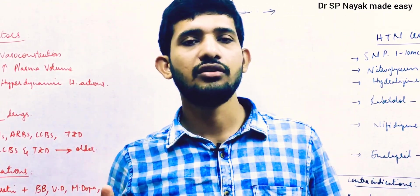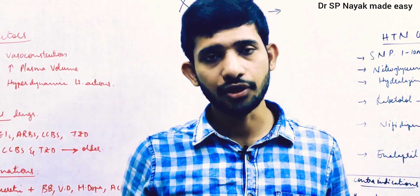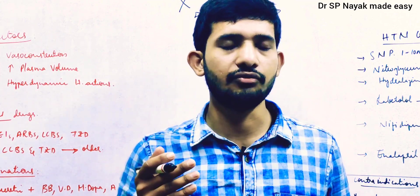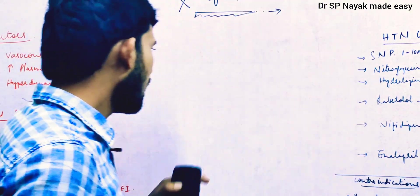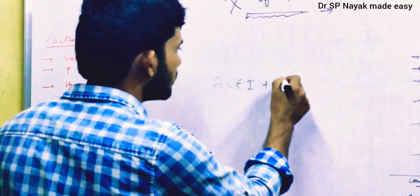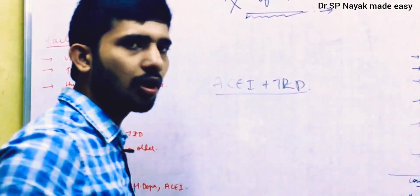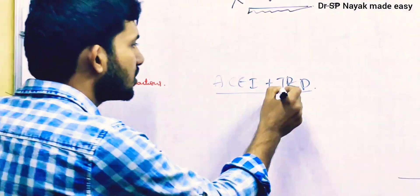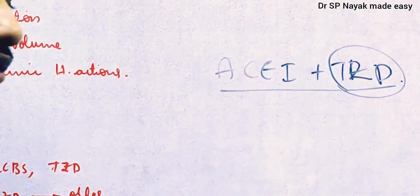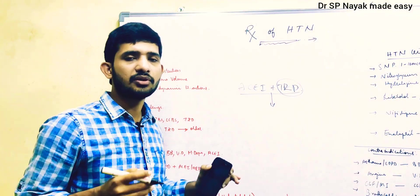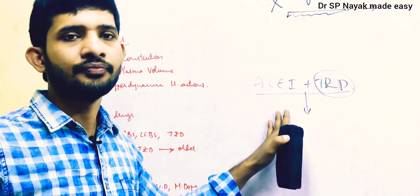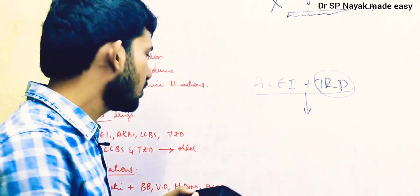If the first drug is not effective, move to dual therapy. In dual therapy, we commonly use ACE inhibitor plus thiazide diuretics. Thiazide diuretics cause hypokalemia whereas ACE inhibitors cause hyperkalemia, so these ADRs balance each other out. This is a good combination that treats approximately 90% of patients.